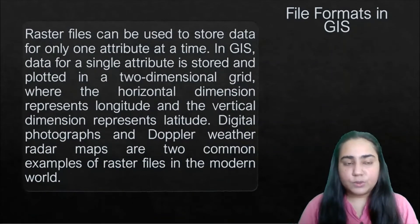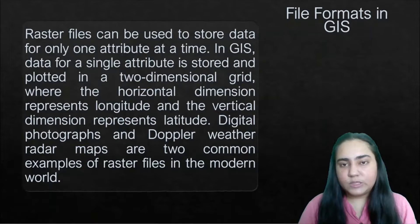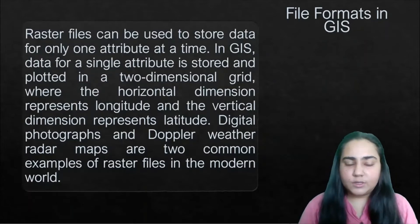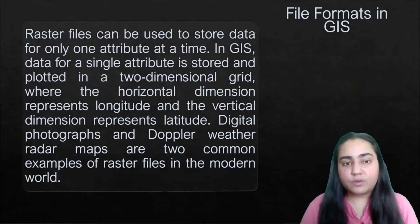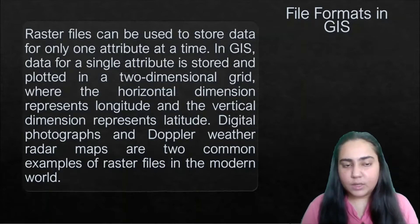Raster files can store data for only one attribute at a time. In GIS, data for a single attribute is stored and plotted in a two-dimensional grid where the horizontal dimension represents longitude and the vertical dimension represents latitude. So if you're working with location data, the x-axis shows longitude and the y-axis shows latitude.